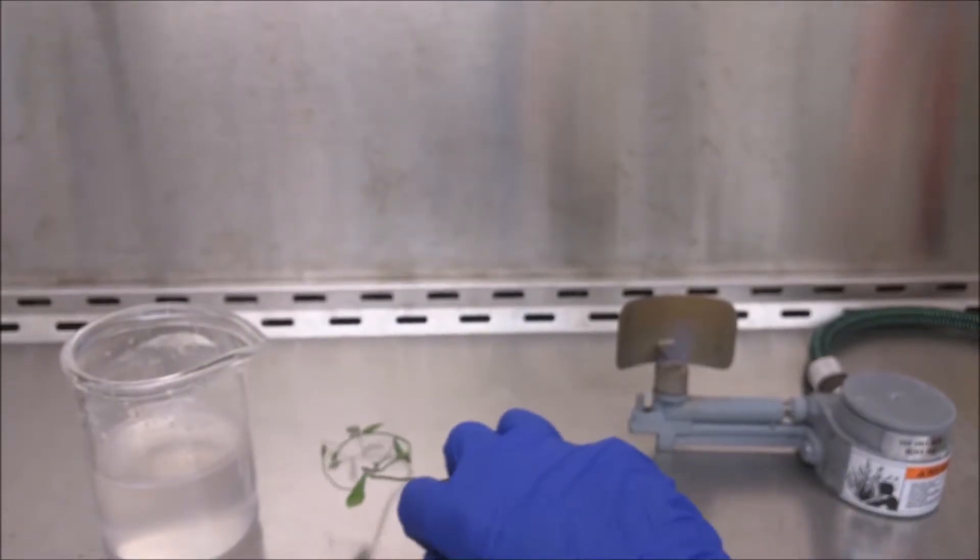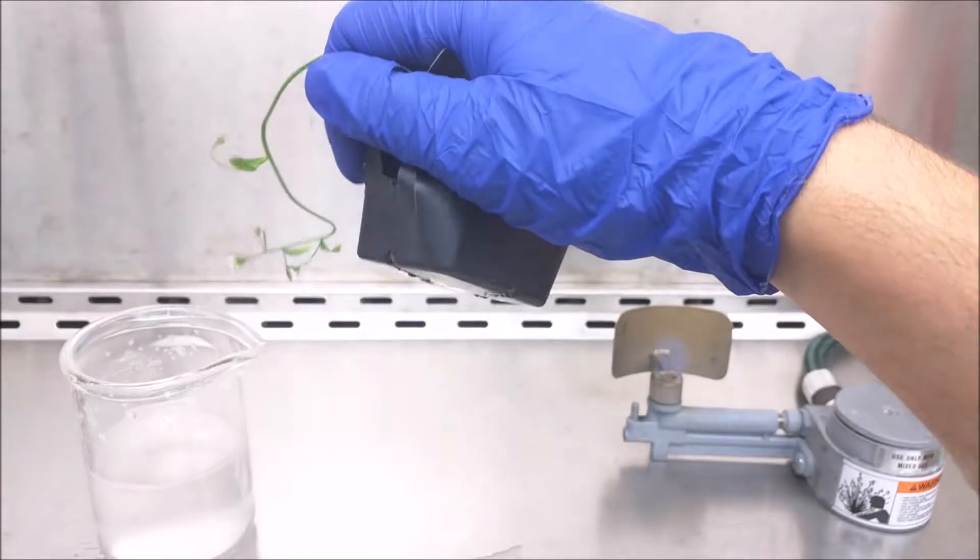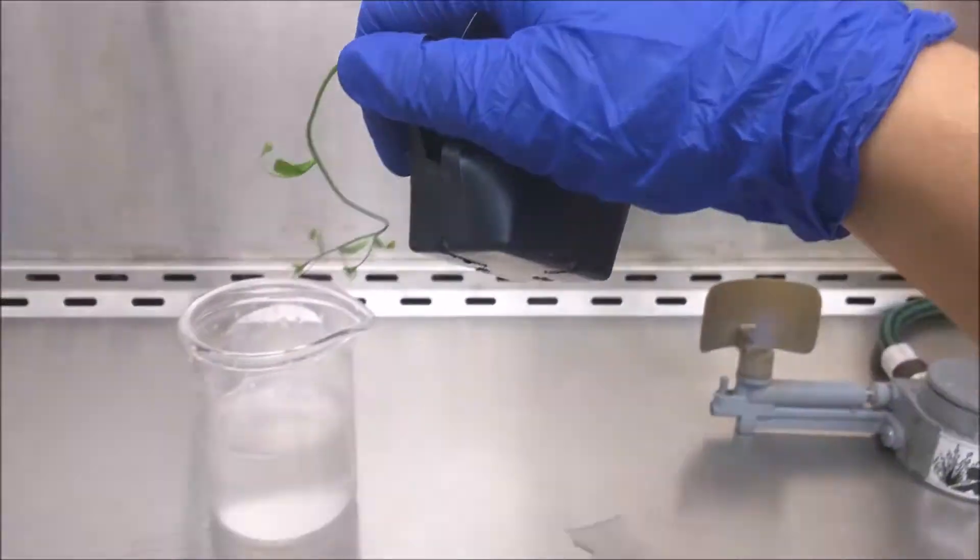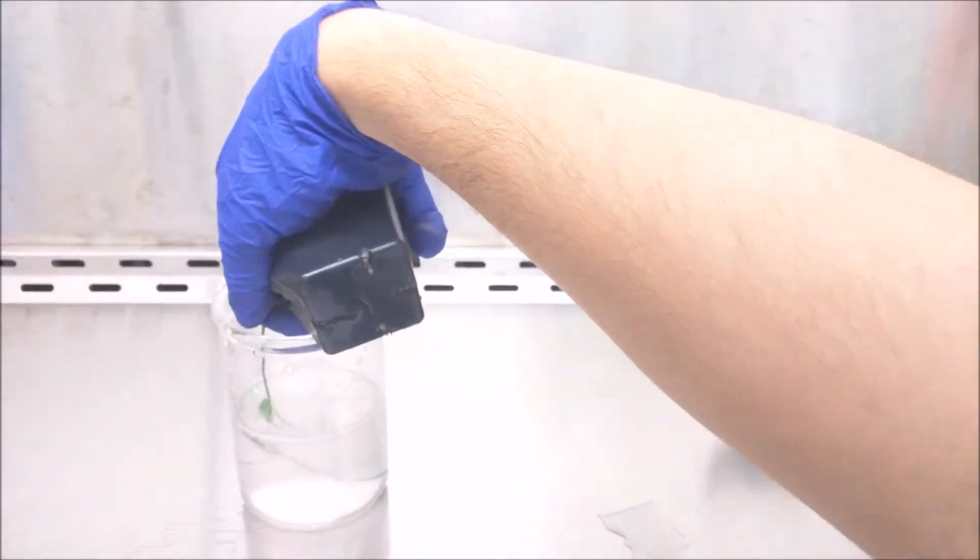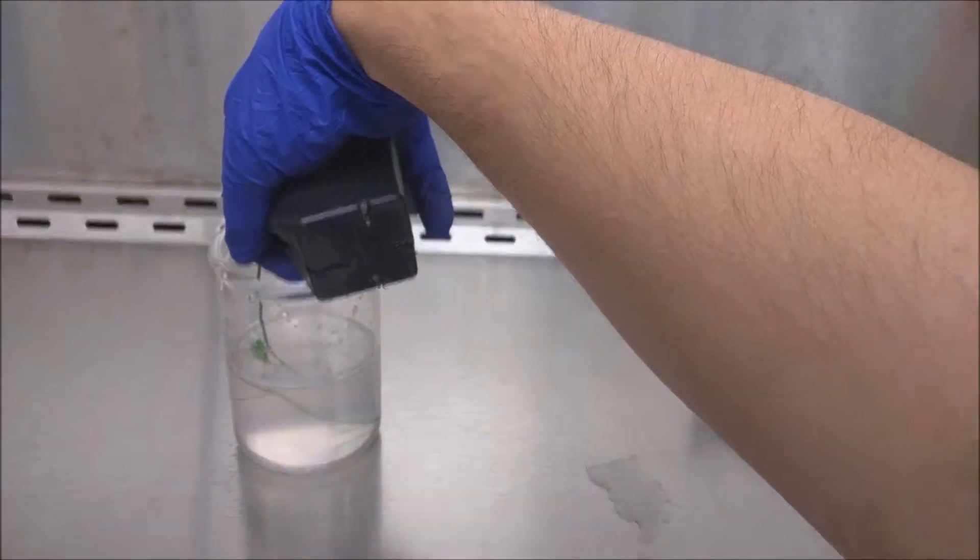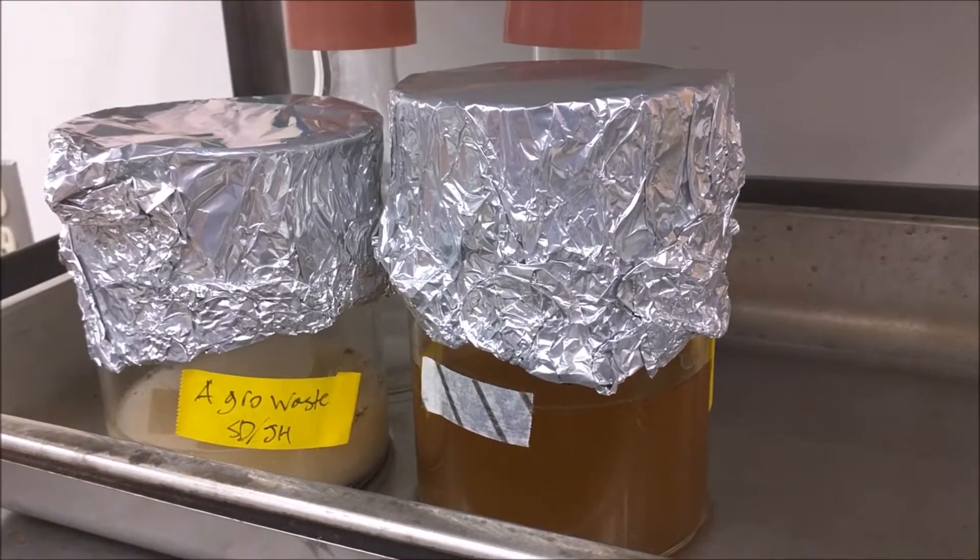Transformation is a simple dip in the solution. Always dispose of Agrobacterium correctly. These flasks have been autoclaved.